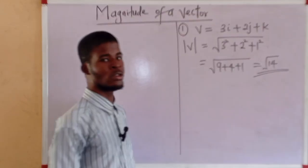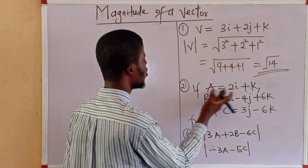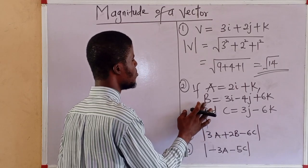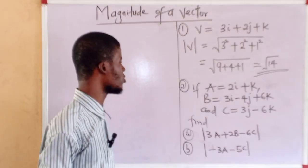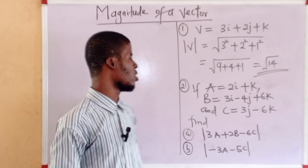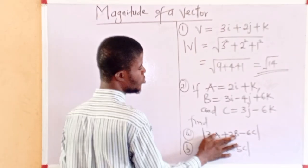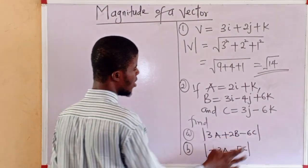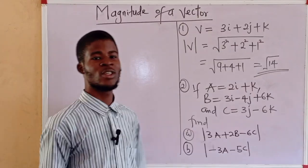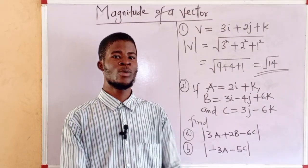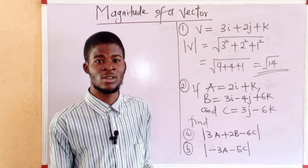The second question I have here is, if a is equal to 2i + k, b equal to 3i - 4j + 6k, and c equal to 3j - 6k, we have to find the modulus of 3a + 2b - 6c, and minus 3a - 5c. I will solve the first one, and I will leave the second one for you to solve, and drop your answer in the comment section. It's quite a simple question.